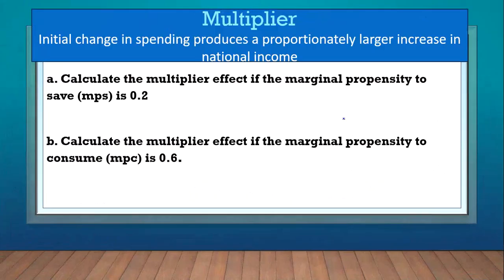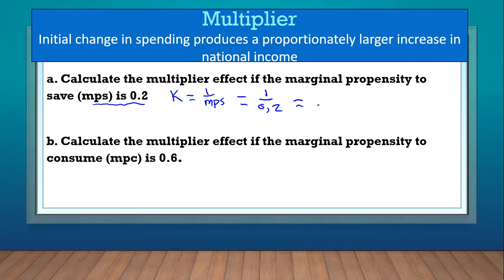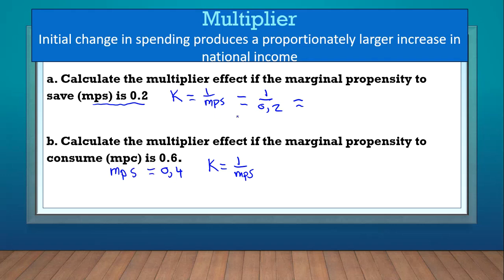Calculate the multiplier effect if the marginal propensity to save is 0.2. K = 1 over MPS, so K = 1 over 0.2. For the next example, calculate the multiplier if the marginal propensity to consume is 0.6. The formula is still 1 over MPS, so we convert: MPC of 0.6 means MPS = 0.4, since together they must add up to 1. Therefore K = 1 over 0.4.